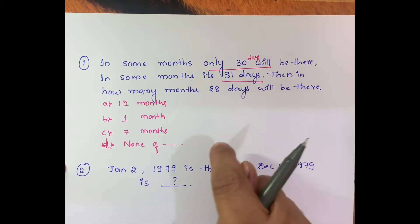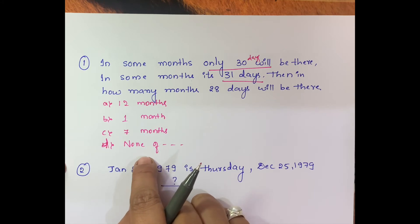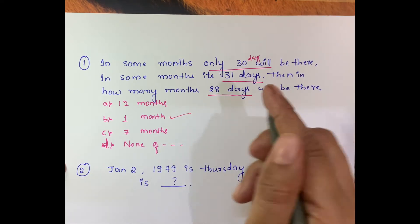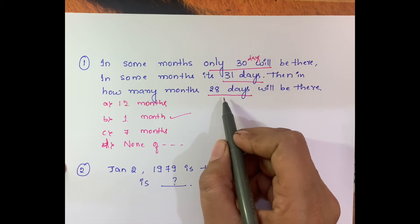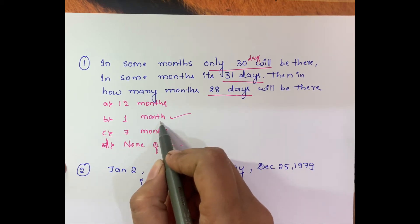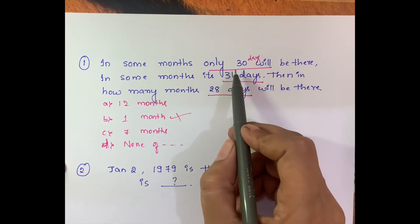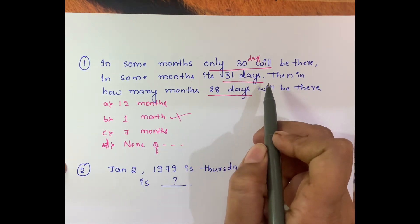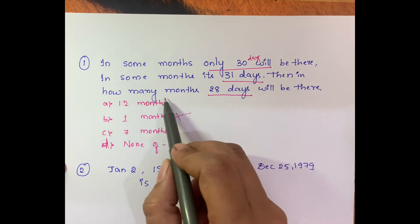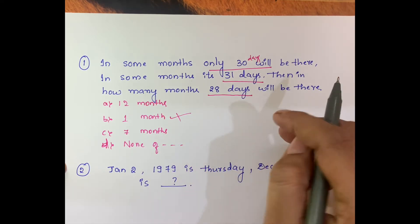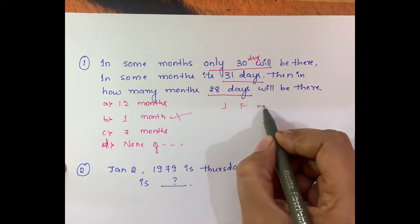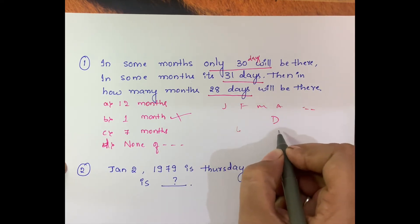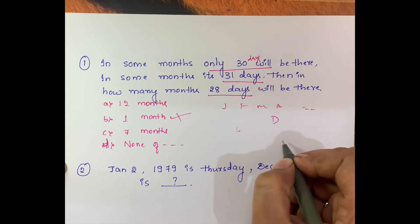As soon as they see the options, everyone thinks 28 days means February — because February has 28 days. So everyone goes for 'one month.' But this is a wrong answer. Some months have 30 days, some have 31 days — that is true. But how many months have 28 days? 28 days are there in all months — January, February, March, April, all the way to December. After crossing 28, some have 30 and some have 31. So all 12 months is the answer.